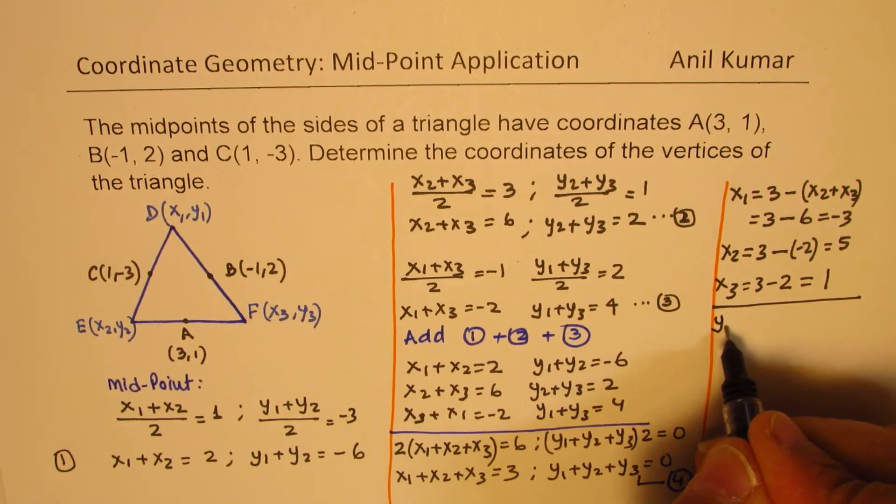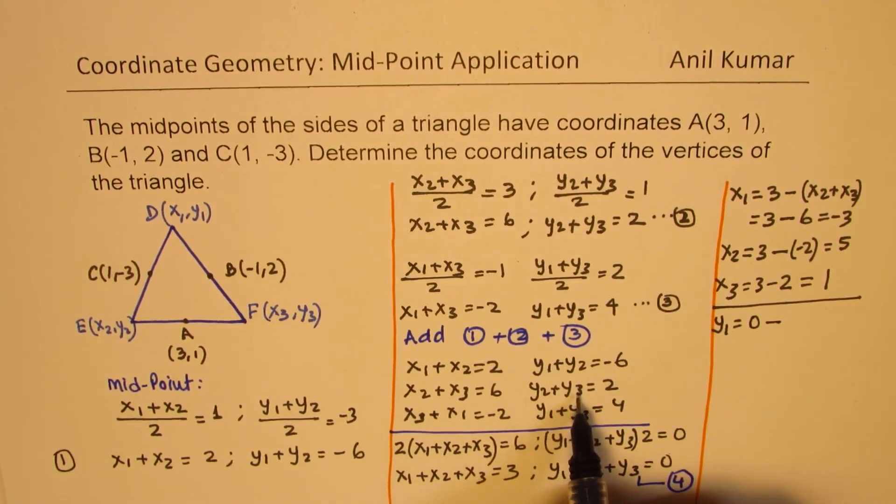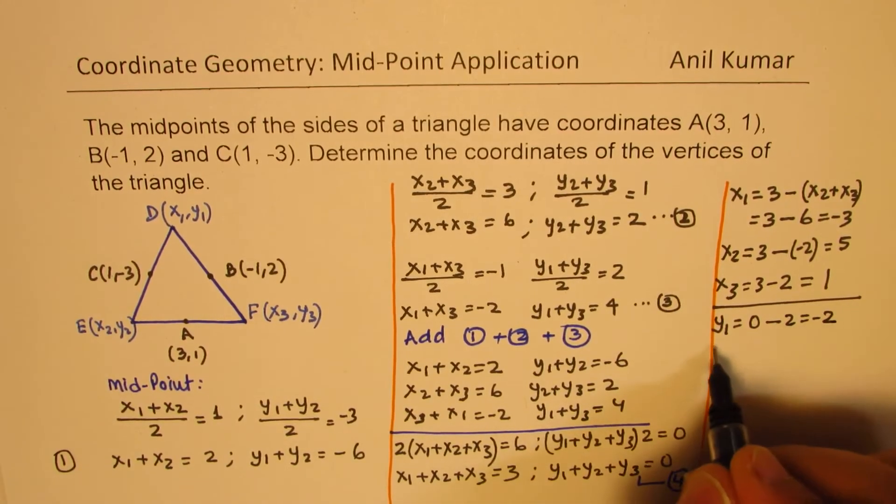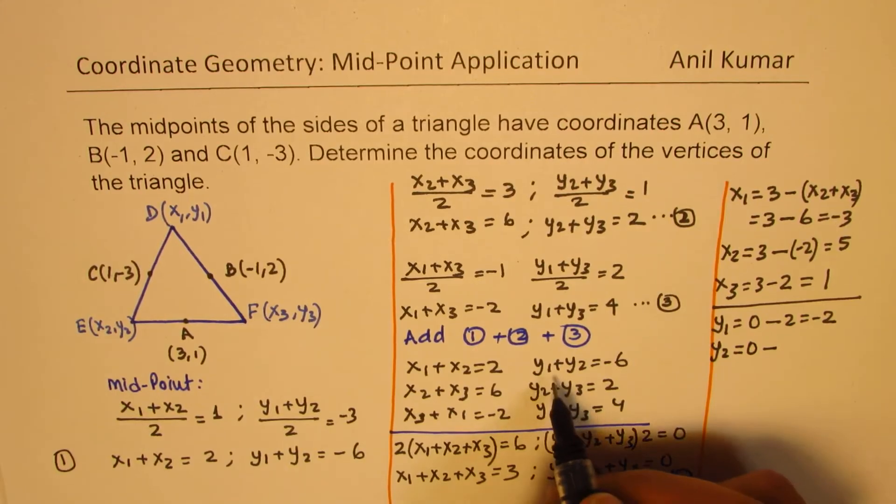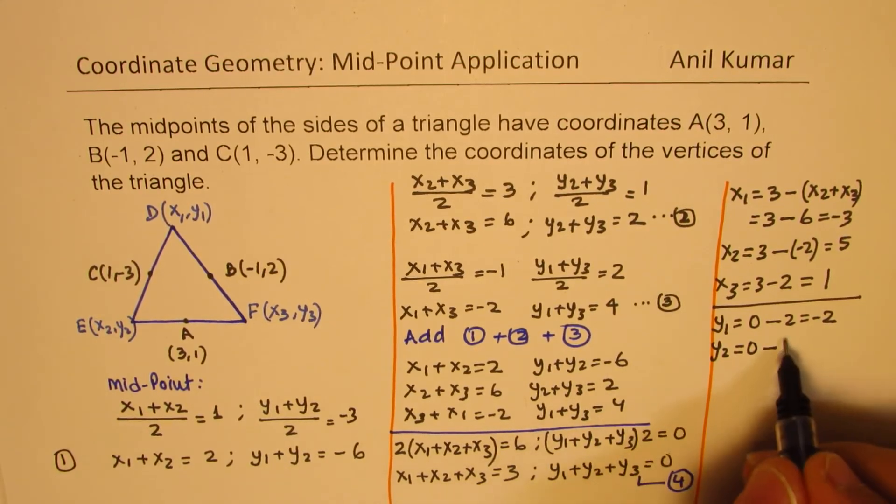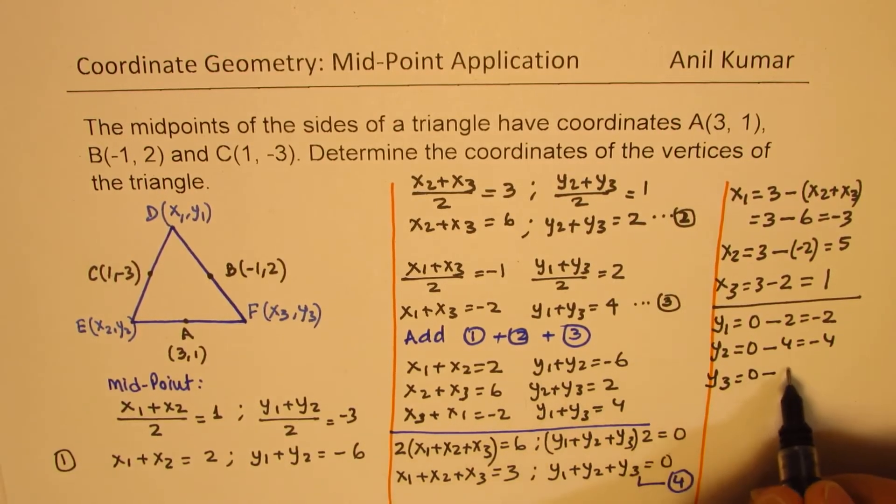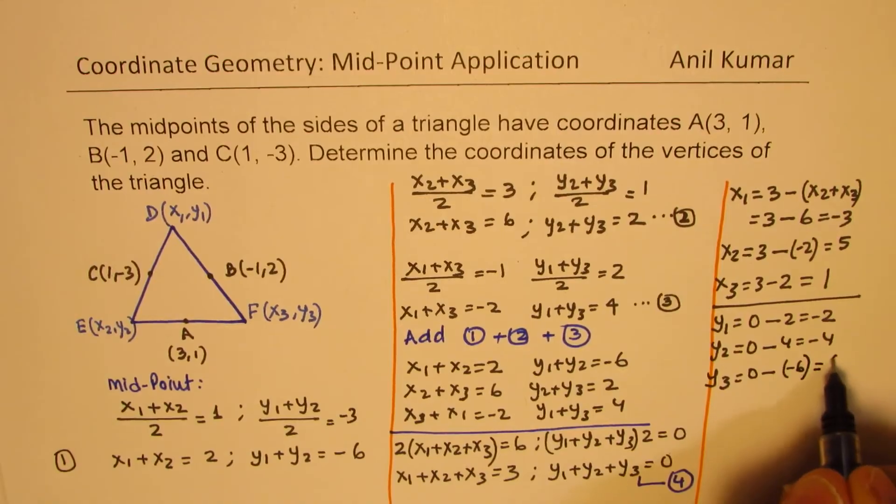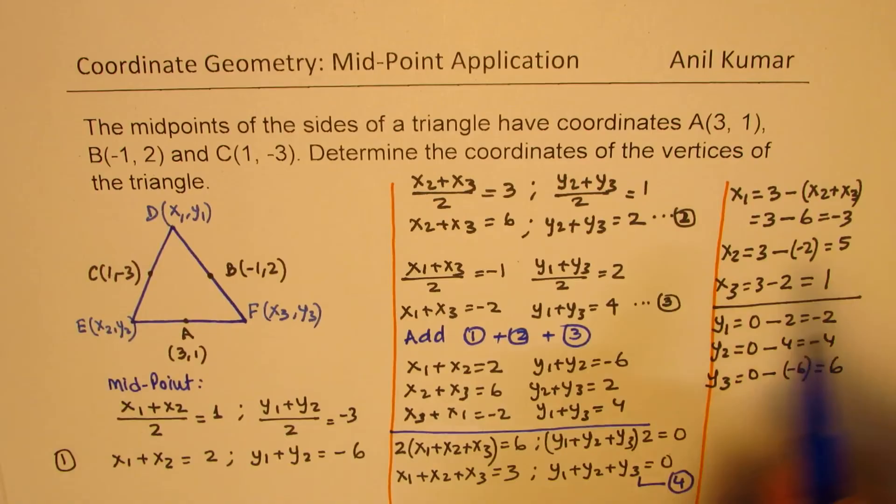Now similarly, y₁ will be 0 minus the sum of y₂ and y₃, which is 2. So we get -2. y₂ will be 0 minus sum of y₁ and y₃, which is 4. So we get -4. And y₃ is 0 minus sum of y₁, y₂, which is -6. So we get plus 6. Do you see that part?